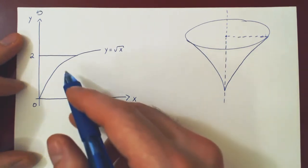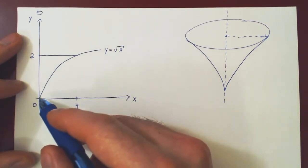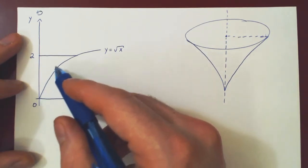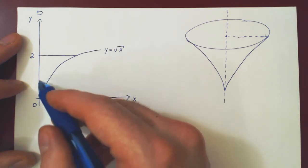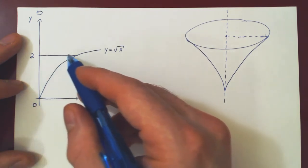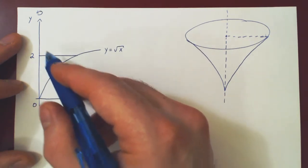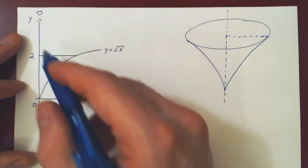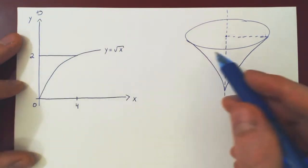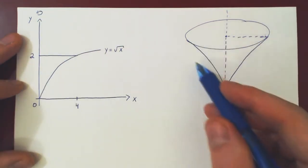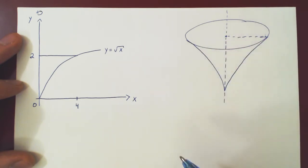If we consider the region in the xy-plane bounded by the curves y equals root of x, the y-axis, and y equals 2, and we revolve this region about the y-axis, we generate a solid of revolution — a very nice little solid.